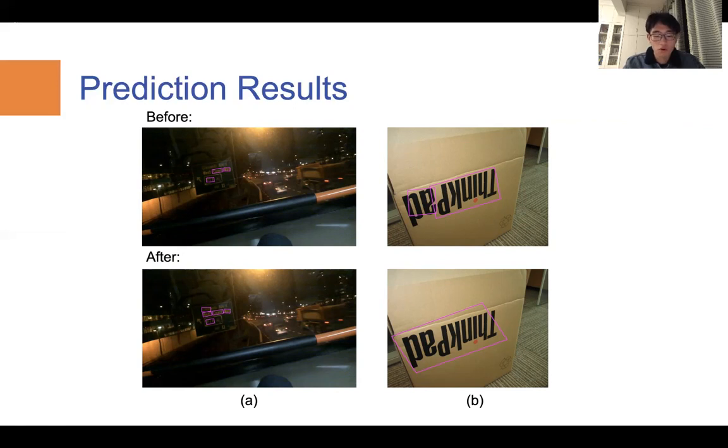Moreover, the attention mechanism boosts the model's reading ability and pre-selecting areas where it is highly possible to contain scene text. As a result, the model's ability is improved in terms of both precision and recall.